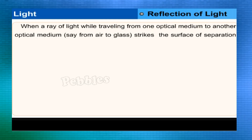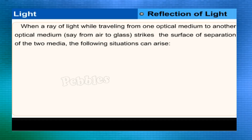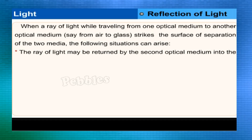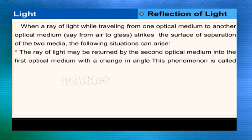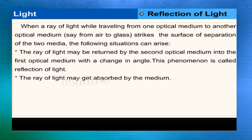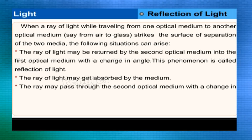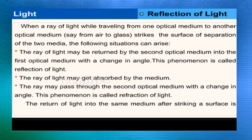Reflection of light: when a ray of light traveling from one optical medium to another — say from air to glass — strikes the surface of separation, the following situations can arise. One: the ray of light may be returned into the first optical medium with a change in angle — this is called reflection of light. Two: the ray may get absorbed by the medium. Three: the ray may pass through the second medium with a change in angle — this is called refraction of light. The return of light into the same medium after striking a surface is called reflection.